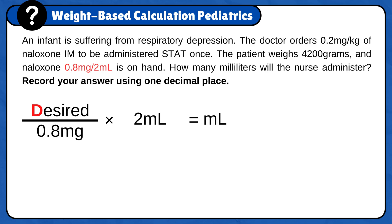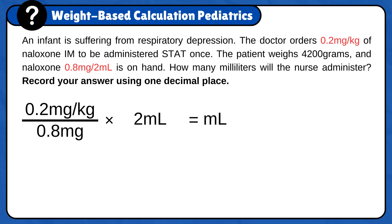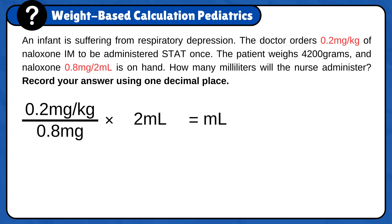For desired, you will plug in the doctor's order: 0.2 mg per kg. In other words, you will give 0.2 mg of medication for every 1 kg of the patient's weight. But you will notice that we need to do some conversions and calculations. Since the medication prescribed and the medication available is in the same unit, milligram, we do not need to convert it. But gram needs to be converted to kilogram so we can get the total prescribed dose.